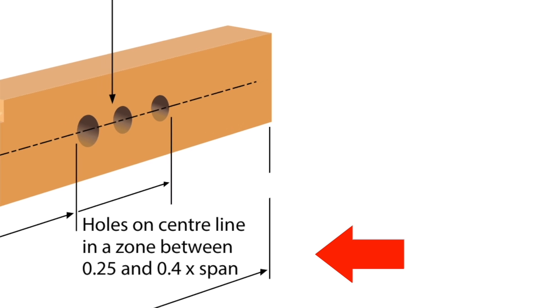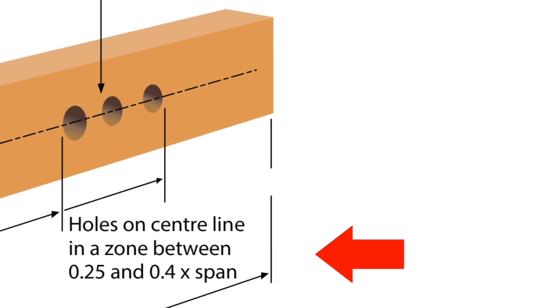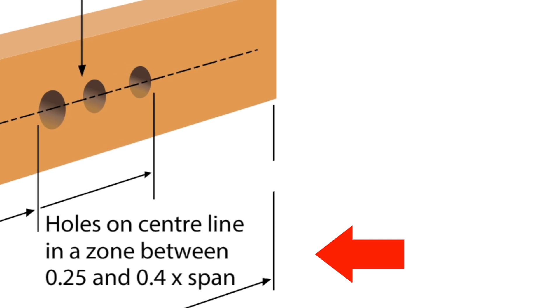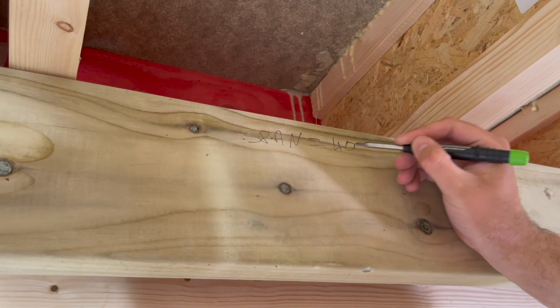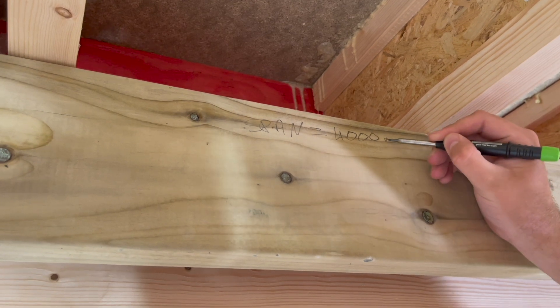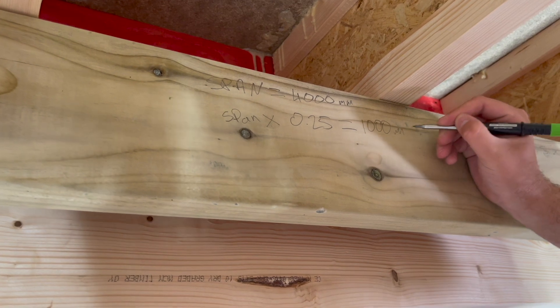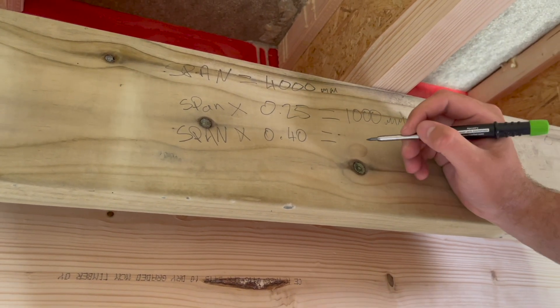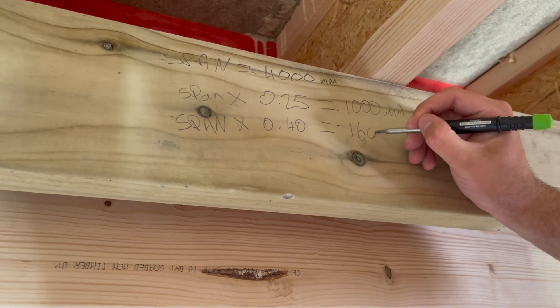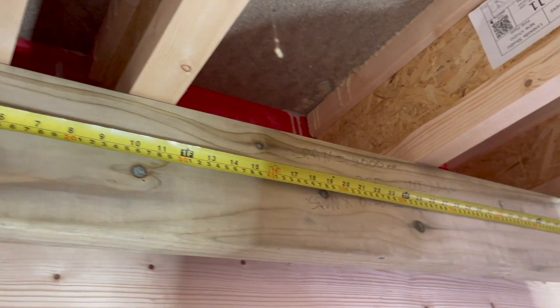And finally D: located between 0.25 and 0.4 times the span from the support. It is important to note that this measurement applies to either side of the joist, and as an electrician this could mean that before we lift that board we might want to get our tape measure out and do some quick measurements. Assuming a span of 4000mm, 0.25 times 4000 equals 1000mm and 0.4 times 4000 equals 1600mm. Effectively that leaves us with a zone of 600mm starting exactly one metre from the left or right support where we are allowed to drill our holes.